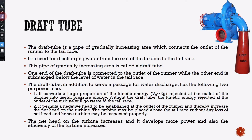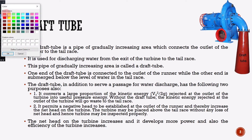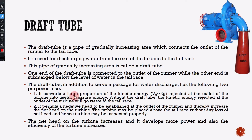What is the purpose of the draft tube? The major purpose of the draft tube is it converts a large proportion of kinetic energy — V2 squared by 2g — rejected at the outlet of the turbine into useful pressure energy. Without the draft tube, the kinetic energy rejected at the outlet of the turbine will go to waste in the tailrace.